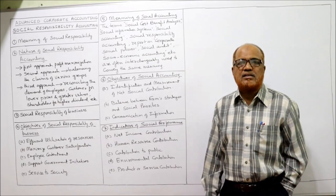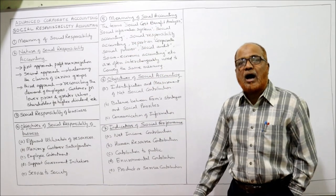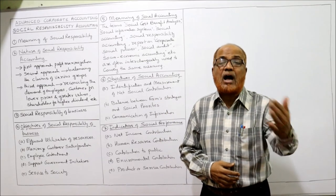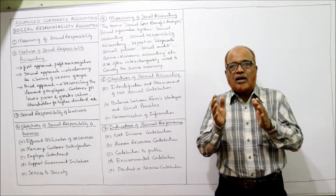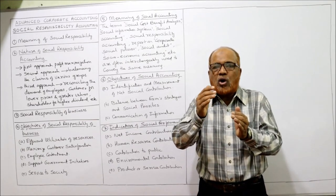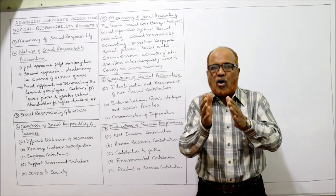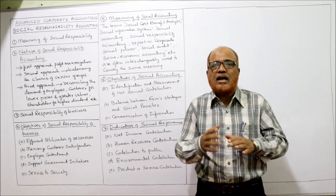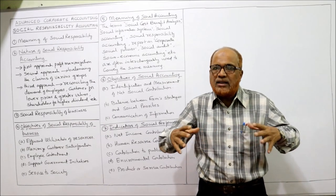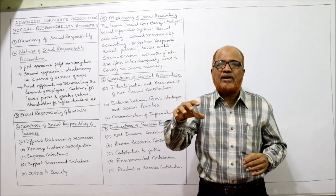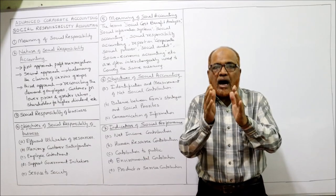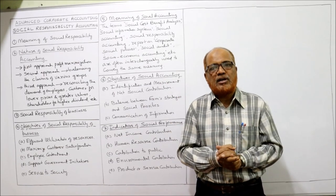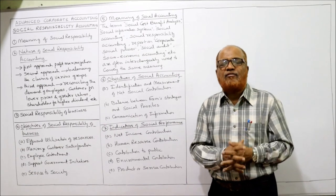Now I am going to explain social responsibility accounting. So far we discussed the responsibilities; now we look at the accounting side. Social responsibility accounting refers to identifying, recording, analyzing, and reporting the cost and benefit to the society made by a business organization while conducting its business activities — what costs and benefits it provides to society during its operations.